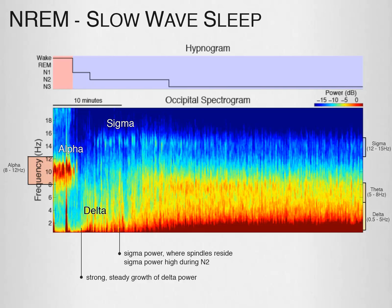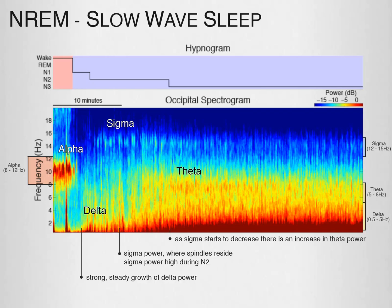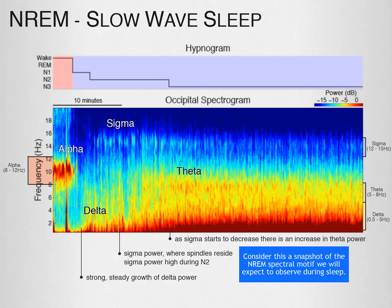Sigma power is high during N2 but then slowly decreases. As sigma starts to decrease, we see an increase in theta power. Overall, the first stage of non-REM sleep is marked by the disappearance of alpha. Stage 2 is marked by a rise in delta and sigma power and the appearance of spindles and K complexes. Stage 3 is marked by a reduction in spindles in the presence of strong slow waves. Consider this a snapshot of the non-REM spectromotif we will expect to observe during sleep — this motif will repeat throughout the sleep record.